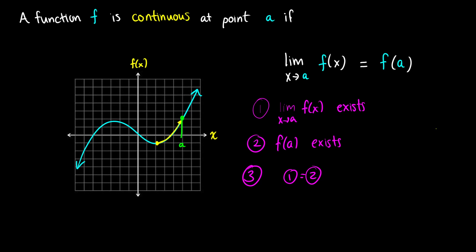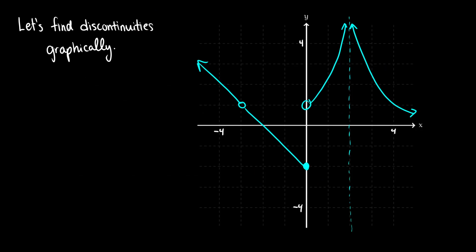We're going to take a look at this graphically and also do this with functions. But before we jump into continuity, we're typically going to talk about discontinuities. There are three types: one is called a removable discontinuity, two is called a jump discontinuity, and three is called either an infinite or asymptotic discontinuity.